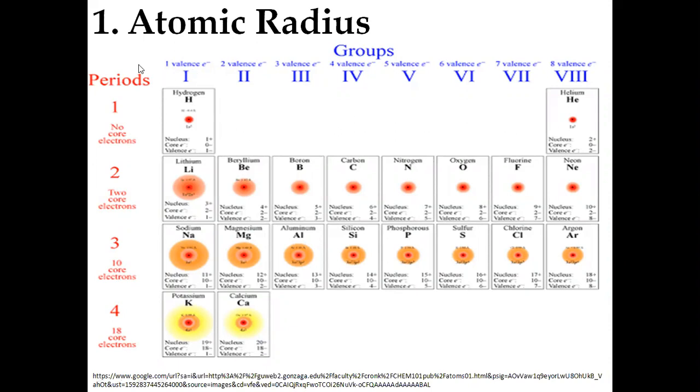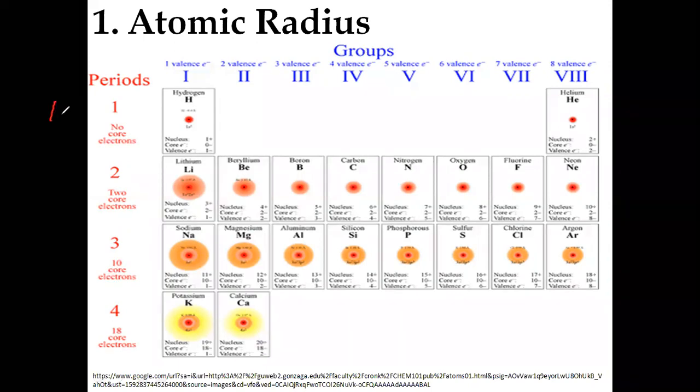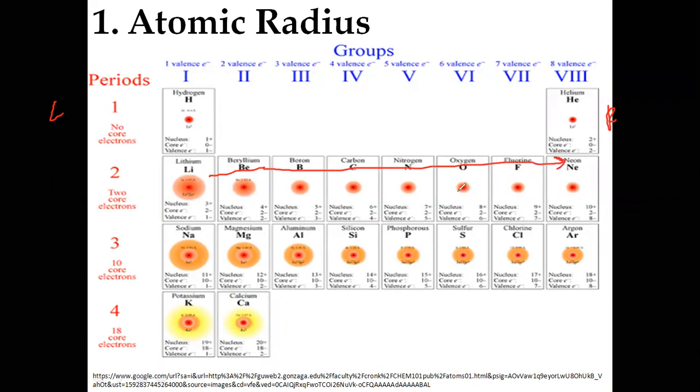What you can see here is from left to right in the modern periodic table in a period, atomic radius decreases. You can see from lithium to beryllium, atomic radius is decreasing from left to right. And in the group from top to bottom, atomic radius is increasing. Why is it? If you want to find an answer for that, then please visit my previous video.